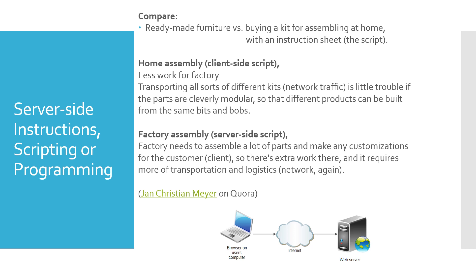We can compare server-side and client-side scripting to furniture assembly. Ready-made factory furniture is like server-side scripting — completely assembled at the factory. IKEA-style flat-pack furniture is like client-side scripting: less work is done at the factory, there's less transportation involved, and different products can be built from the same modular parts. With factory assembly, the factory handles all customizations, requiring more work and logistics on that end.